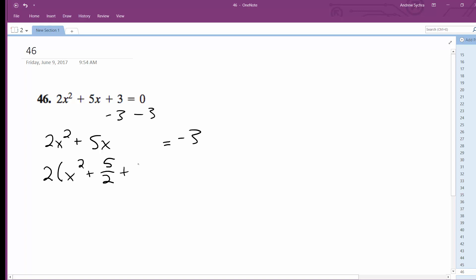And then 5 fourths squared, so 25 over 16. It's equal to negative 3. So it's 25 over 2, so it becomes 25 over 8.